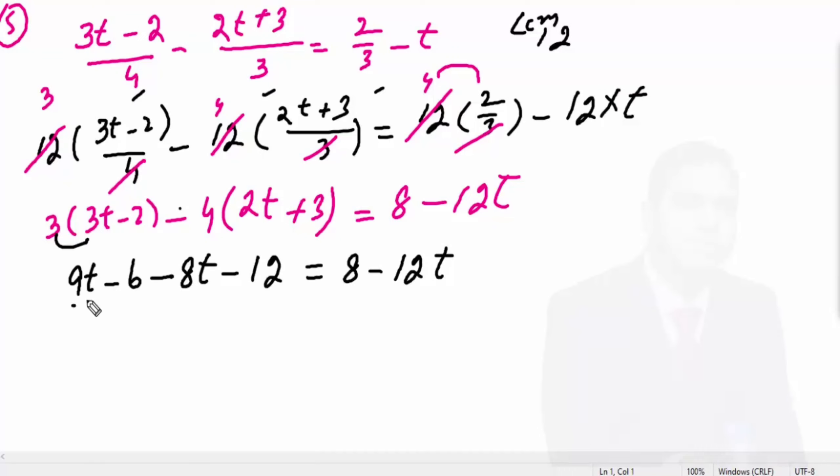Now simplify. 9t minus 8t is equal to t. Here minus 6 minus 12 is equal to minus 18. This is the situation.